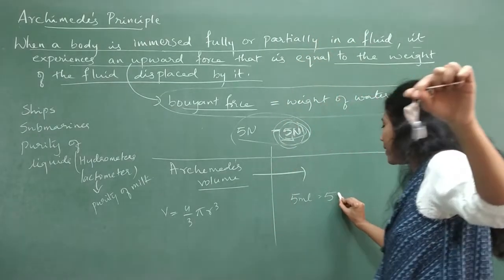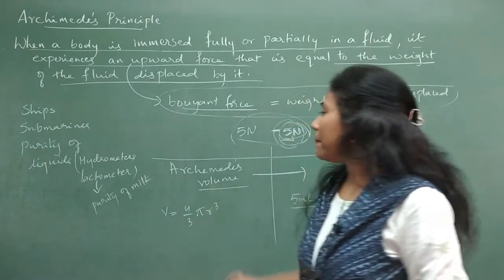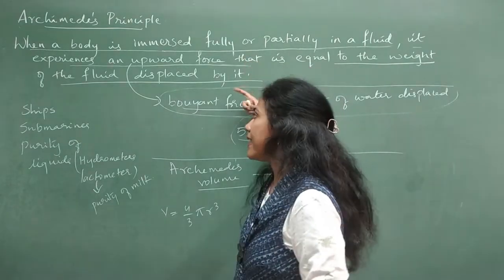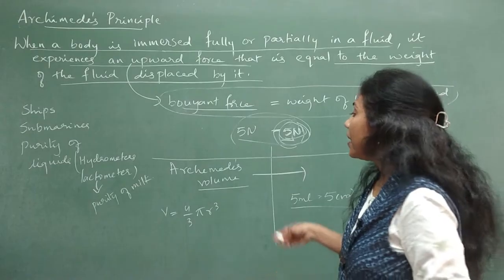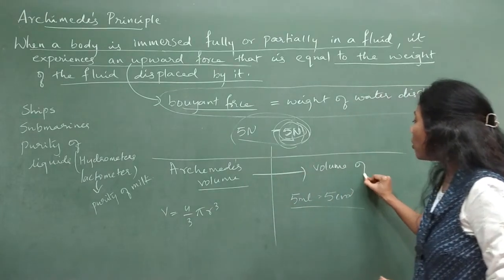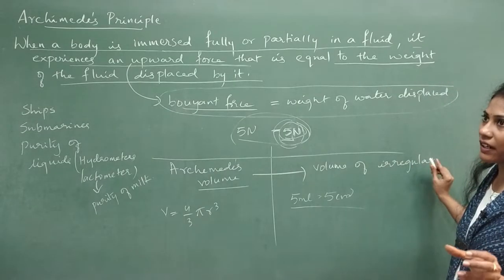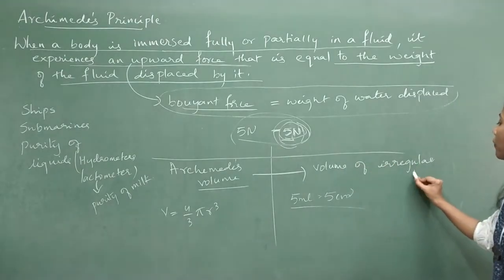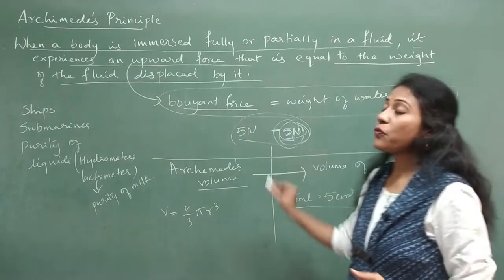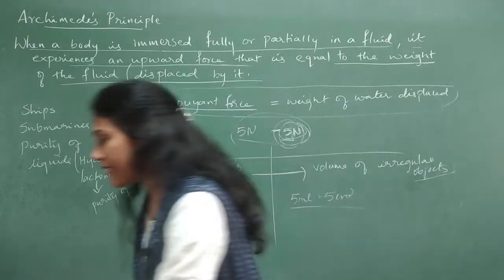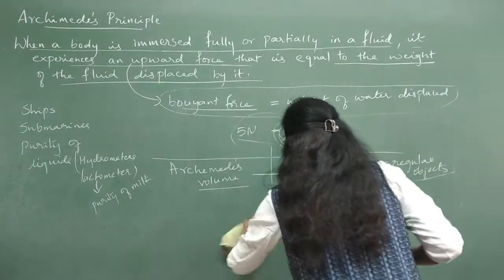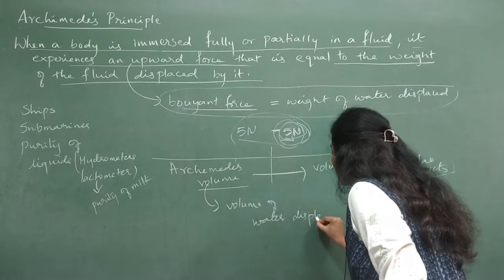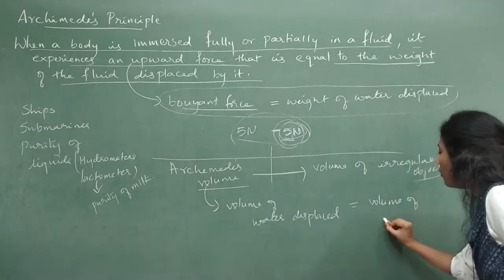If the water displaced is 5 ml, then the volume of the object is 5 ml or 5 cm³. This is what we mean by the Archimedes volume principle. Let me write the concept: volume of water displaced = volume of object. For regular objects like spheres, circles, and rectangles you have formulas, but for irregular objects this law is used.